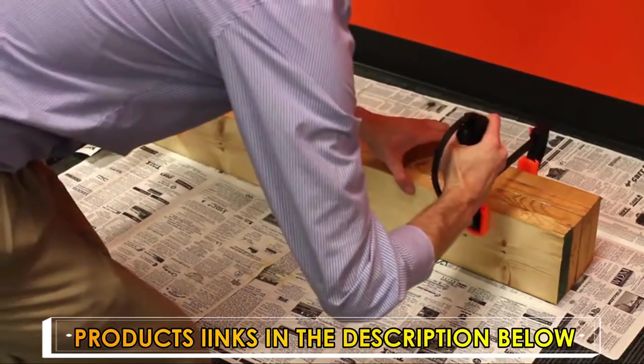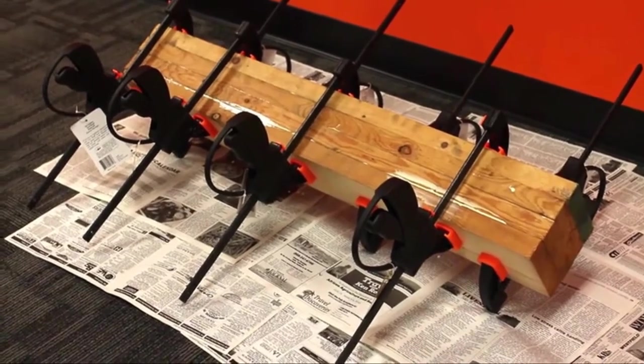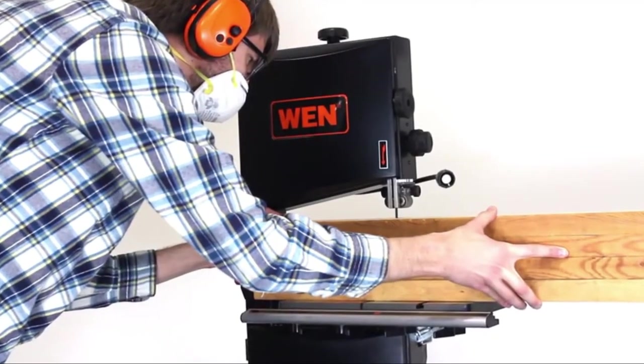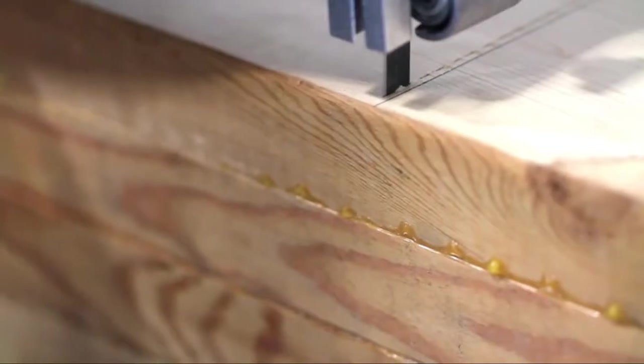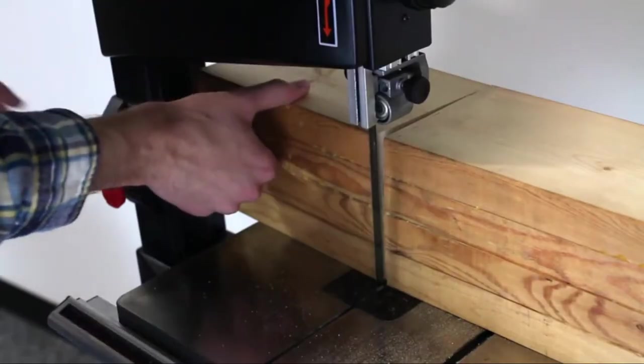Finally, clamp the boards tightly to one another and leave them overnight to dry. Once the boards are nice and dry, use the Wynn bandsaw to cut the slab into 10 inch segments. Now you have a nice 6 by 6 by 10 inch block of wood to work with.